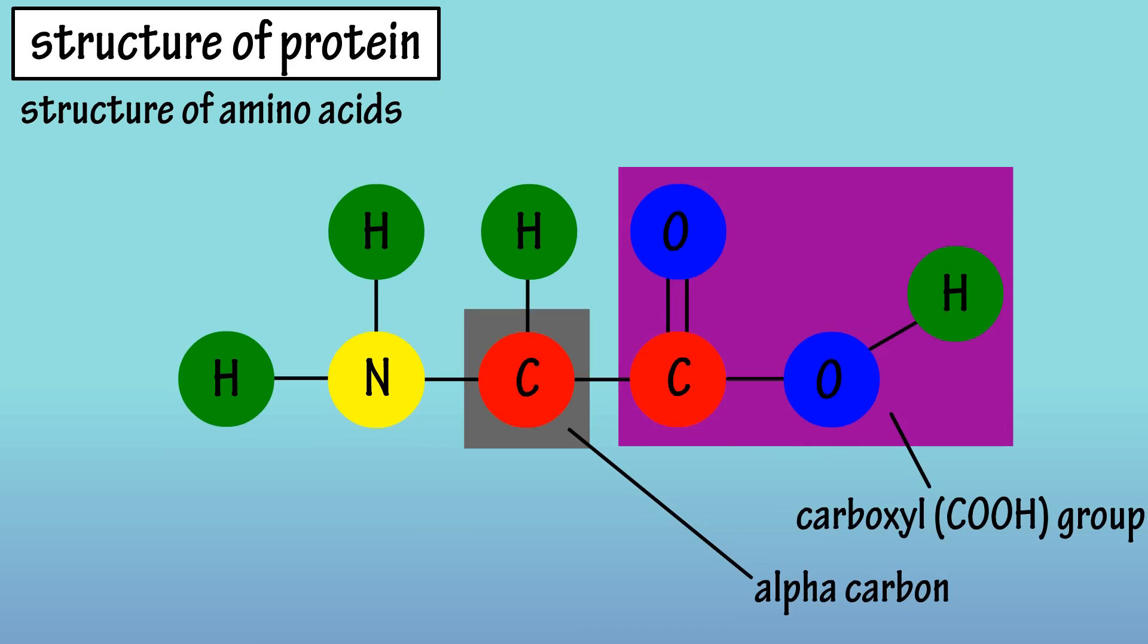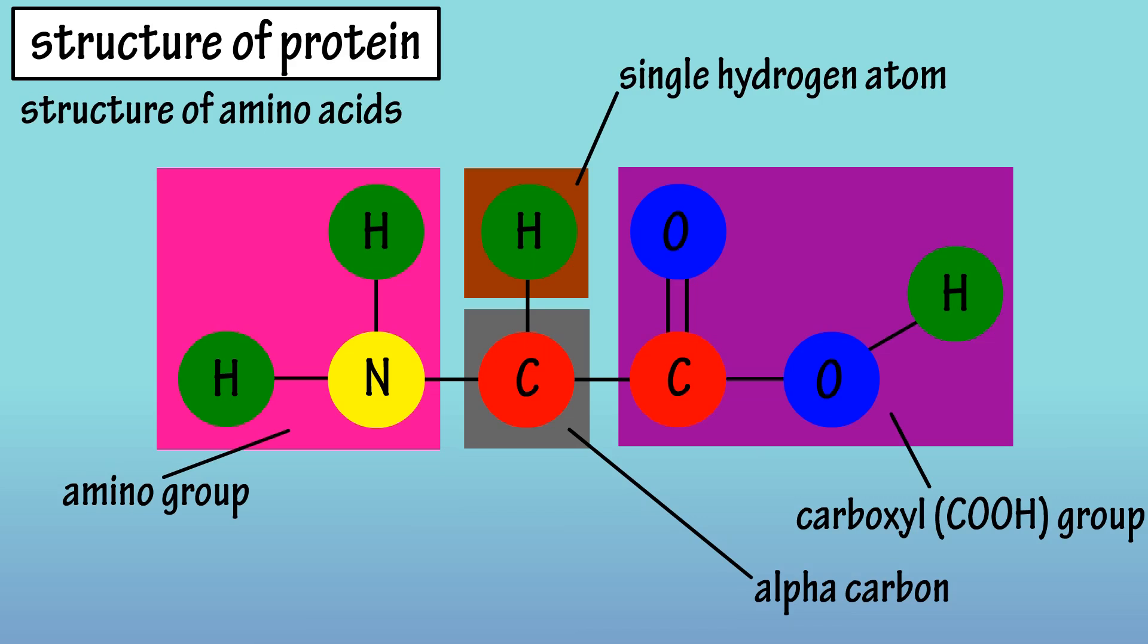The basic structure of amino acids is that they consist of an alpha carbon, a carboxyl group, which is a carbon, oxygen, oxygen, hydrogen group, a lone hydrogen atom, an amino group, which is a nitrogen, hydrogen, hydrogen group, and a side chain, or functional group, which is often referred to as the R group.